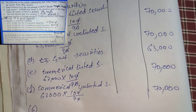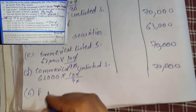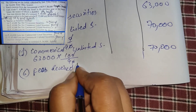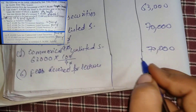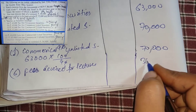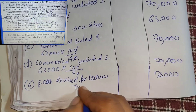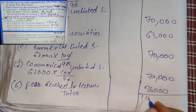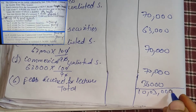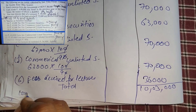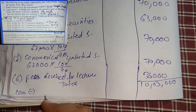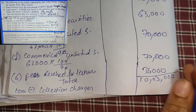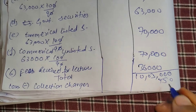Collection charges will be minused at the end. Next, fees received from lectures and seminars — same cost: 36,000. We will write 36,000. Now we total everything: our total is 10,03,000. Collection charges were left, so we minus those: 4,50. We minus 4,50.